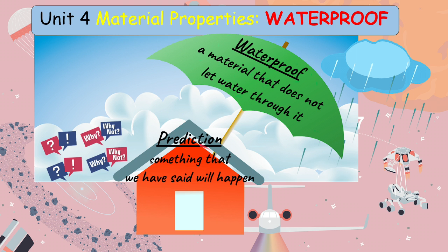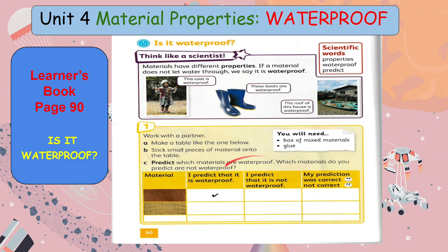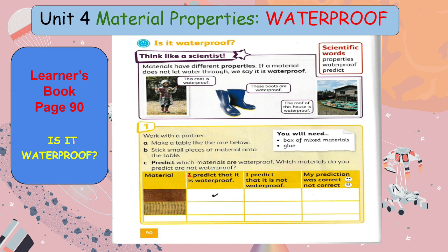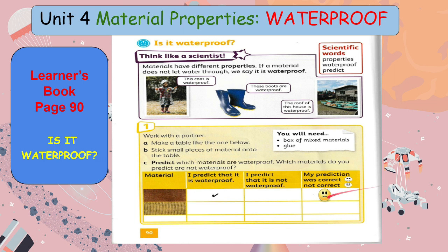And what about prediction? Prediction is something that we have said will happen. In your learner's book page 90, let's complete the table — predict which materials are waterproof and which materials you predict are not waterproof. We want to find out which materials are waterproof: is it wood or is it fabric? The first one has been done for you — wood, I predict that it is waterproof. Now, is your prediction correct or not correct? You write here, or draw a sad face for not correct or a happy face for correct prediction.